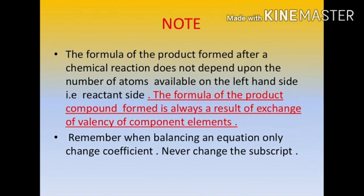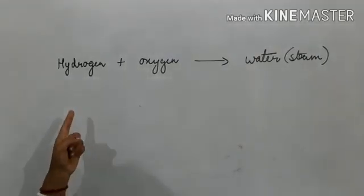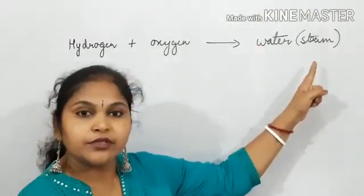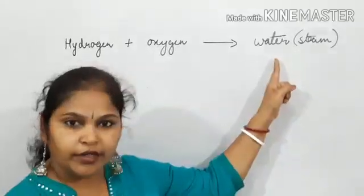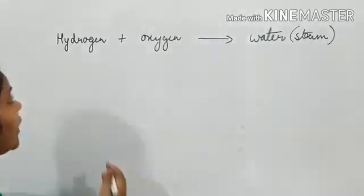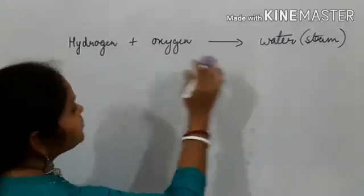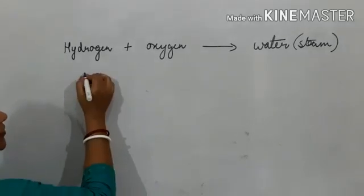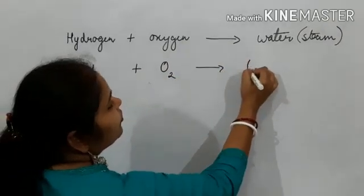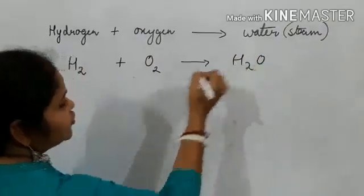I will now explain balancing of chemical equations with the help of a few examples. Let's start with the first example: hydrogen and oxygen. Hydrogen burns in the presence of oxygen to give you steam. Steam is water itself. The molecular formula of steam and water is the same because it's the same compound. The molecular equation for this reaction is: H2 plus O2 gives you H2O.